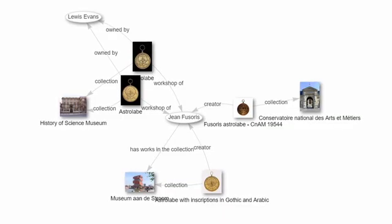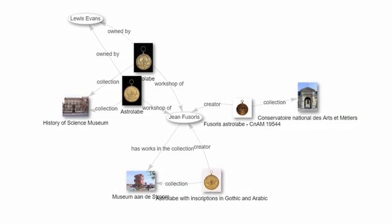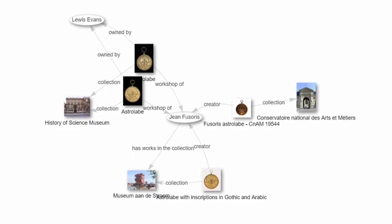So an astrolabe is a kind of scientific instrument. A particular astrolabe was made by Jean Fusoriste. Jean Fusoriste worked in France. All of those are simple properties. And when you have billions and billions of those properties, they form a kind of web. You can query that web in lots of different ways to get out interesting knowledge.